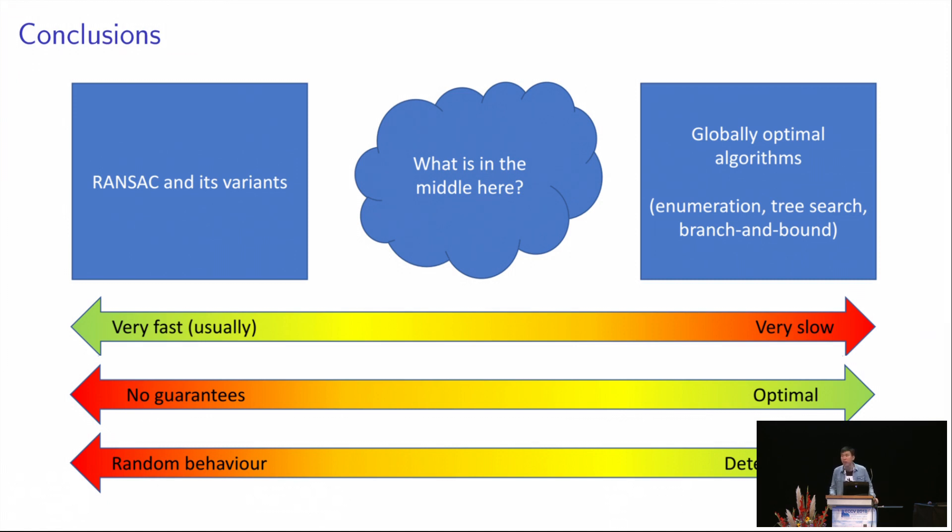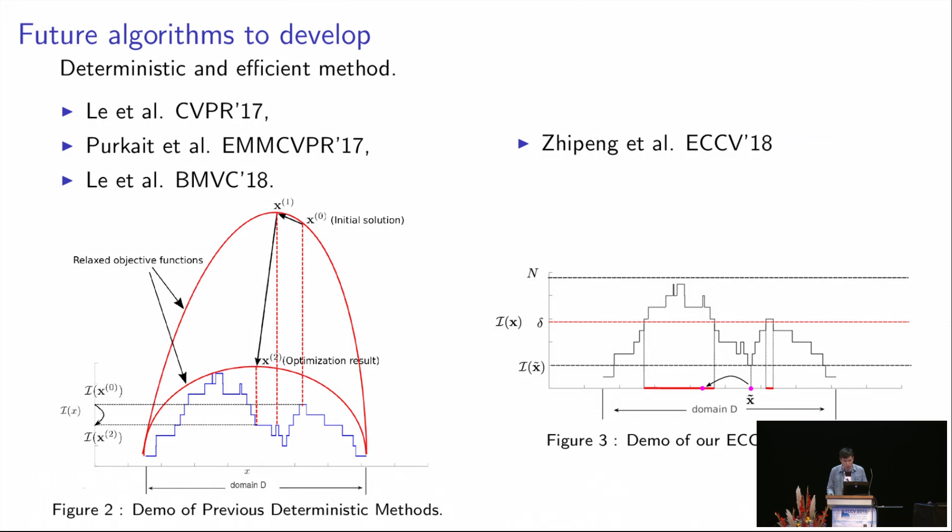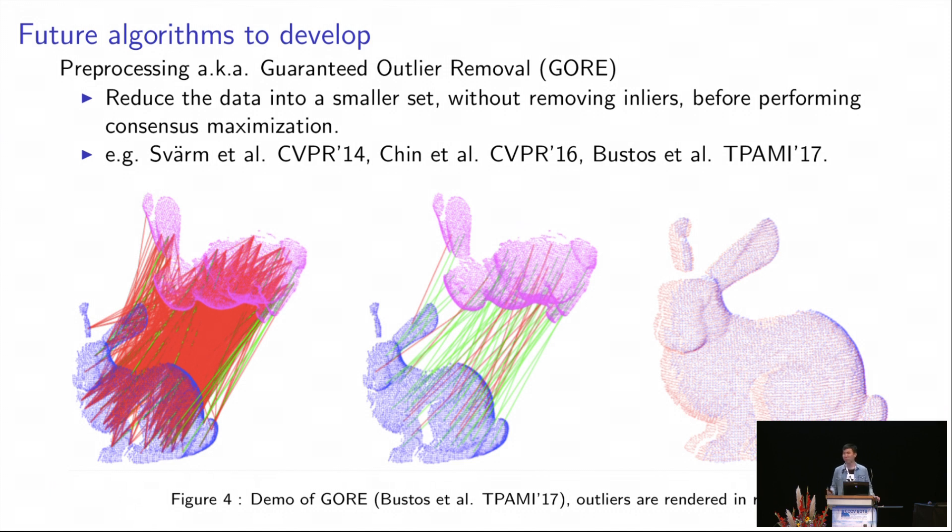So to summarize, in industrial applications, we almost always want our application to run fast because we don't want our autonomous car to run very slowly, right? So using this assumption, we know that we don't want to hope to come up with guarantees for robust fitting problem, for consensus maximization problem in general. So all we got to choose is whether we have random behavior or determinism. So that basically tells us that the algorithm I proposed in the last talk is basically the best thing we can have, somehow. Thank you.